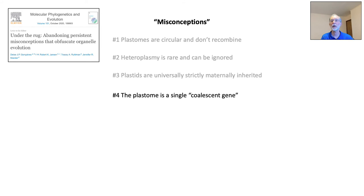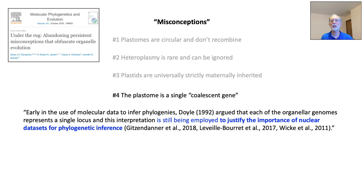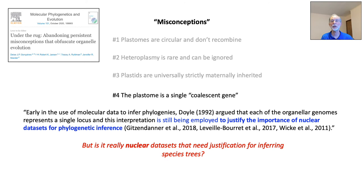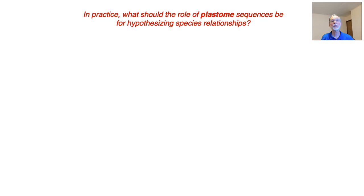Given all of this, I do not believe that Gonsalves et al. have made a strong case for the plastome as comprising multiple C genes. This brings me to the final topic: the theory and practice of phylogenomics. Gonsalves et al. suggest that acceptance of the plastome as a single C gene is a misconception still being employed to justify the importance of nuclear datasets. But have nuclear genes ever needed justification for inferring species trees? I don't believe so. Clearly the nuclear genome can be assumed to comprise a large number of C genes. The plastome has only been used because of its desirable technical properties — high copy number and its ability to produce a robust tree through concatenation. So now that nuclear genes are readily available, the question that should be asked is: in practice, what should the role of plastome sequences be for hypothesizing species relationships?